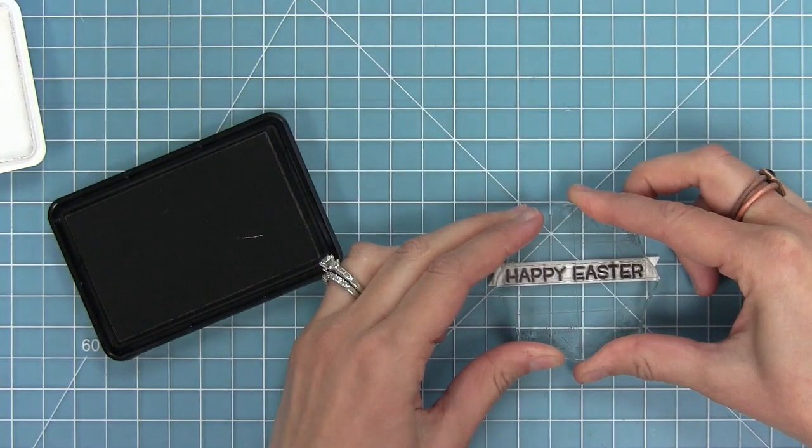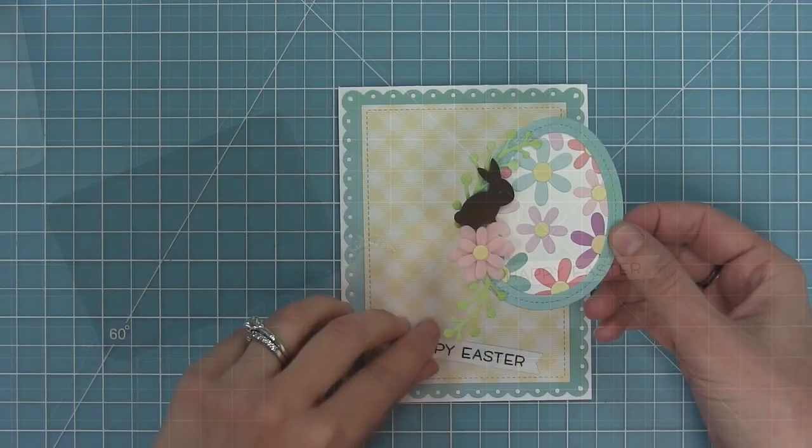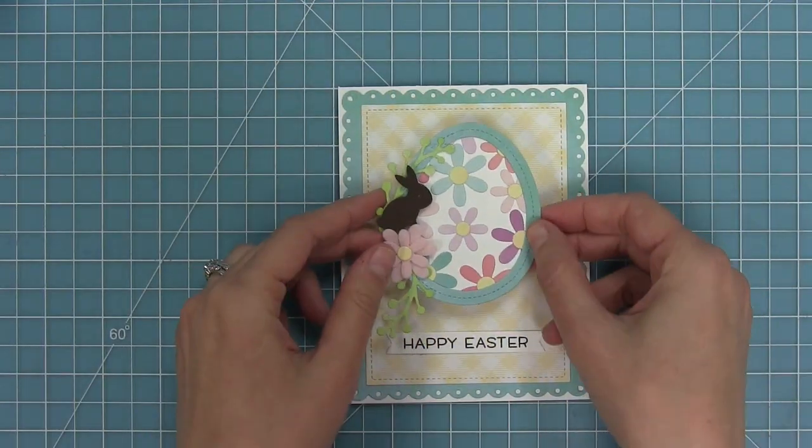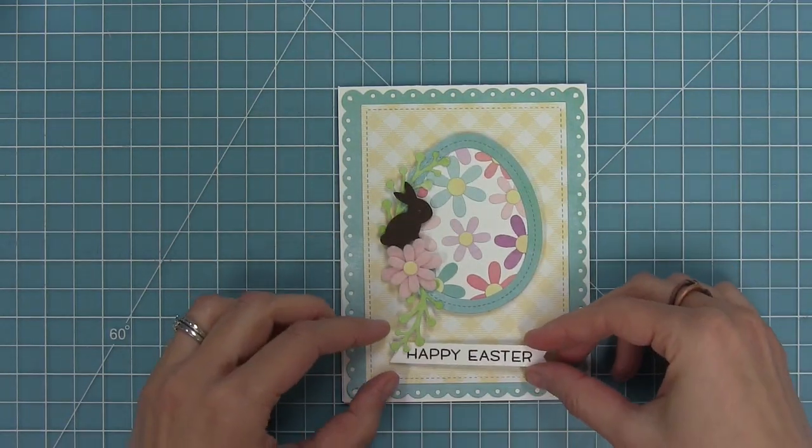Once that's done it's time to layer everything so I'm going to add some foam dots to the back of my egg and my little easter sentiment there and I'm going to layer those both onto my card front.